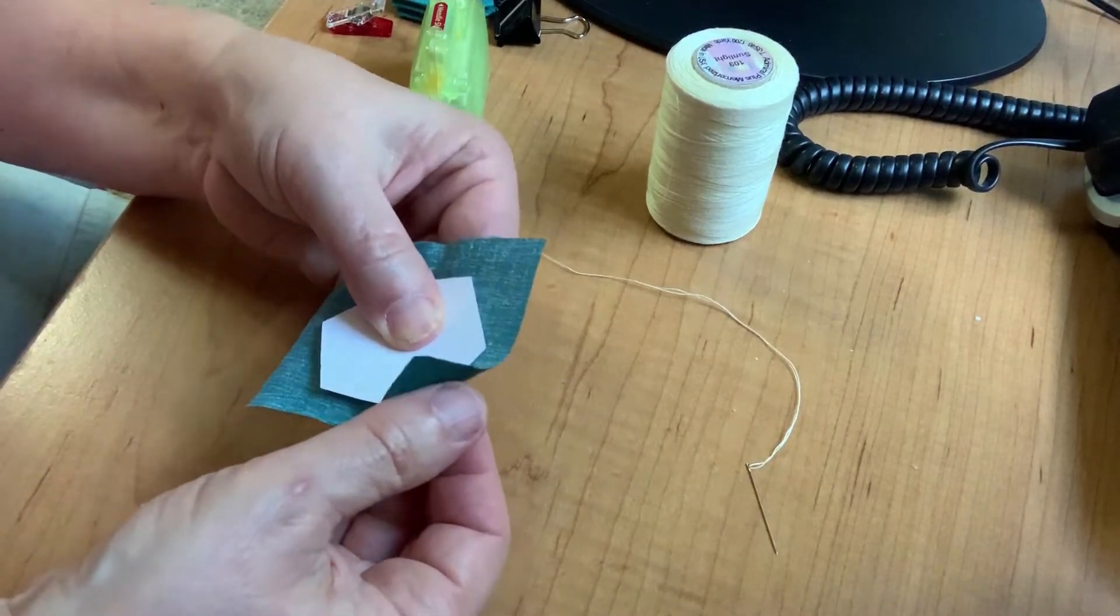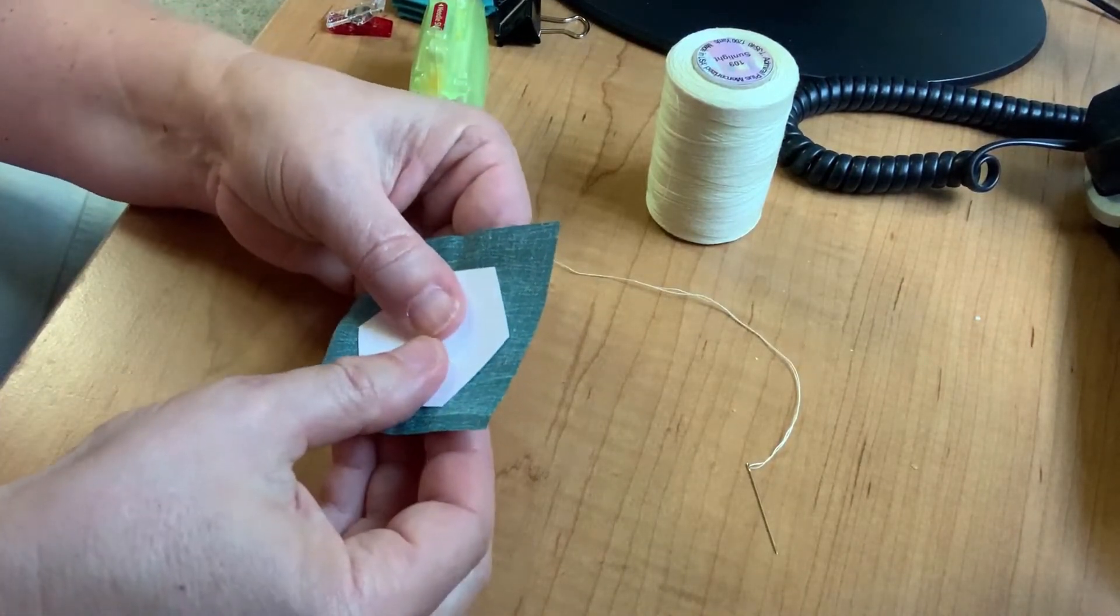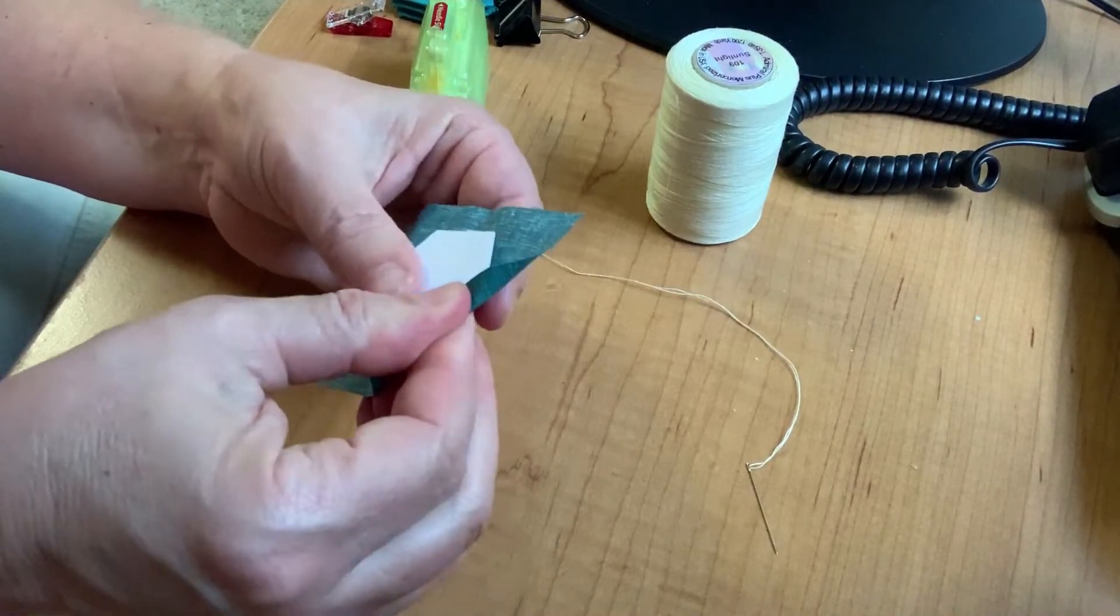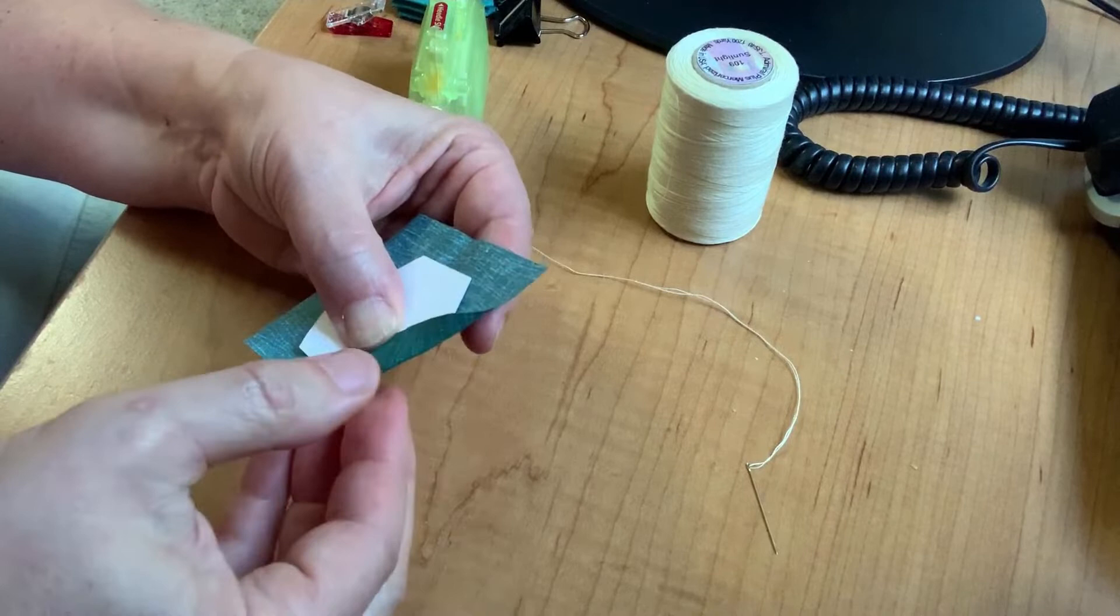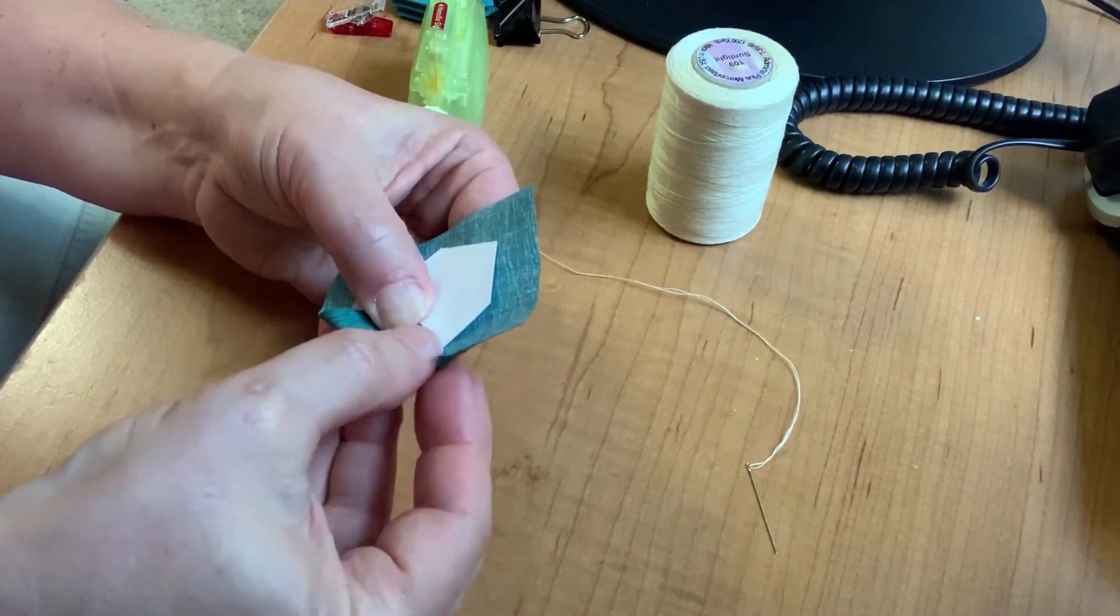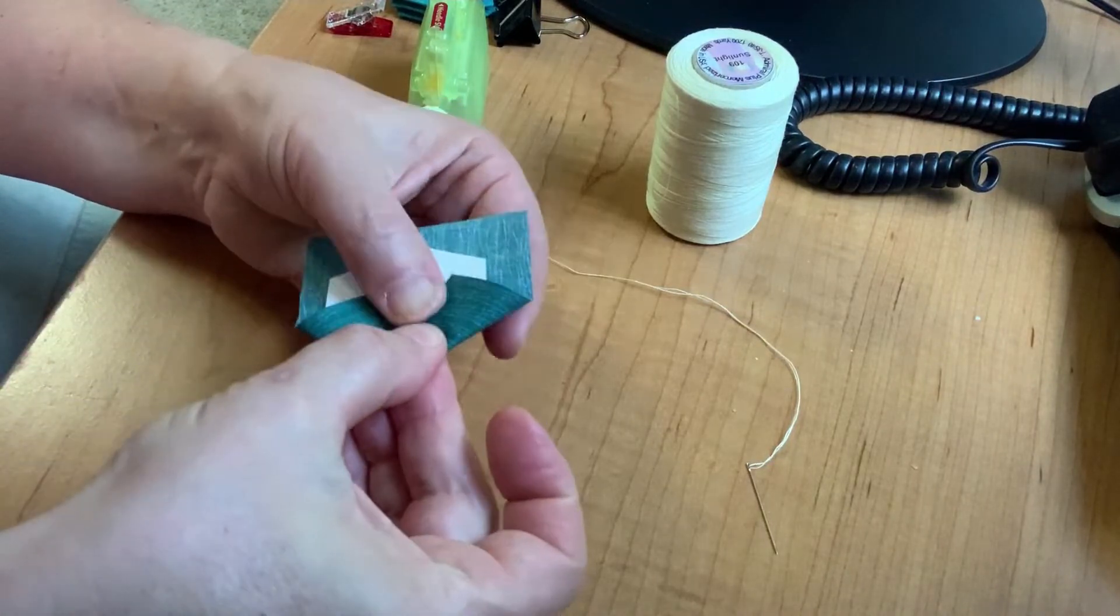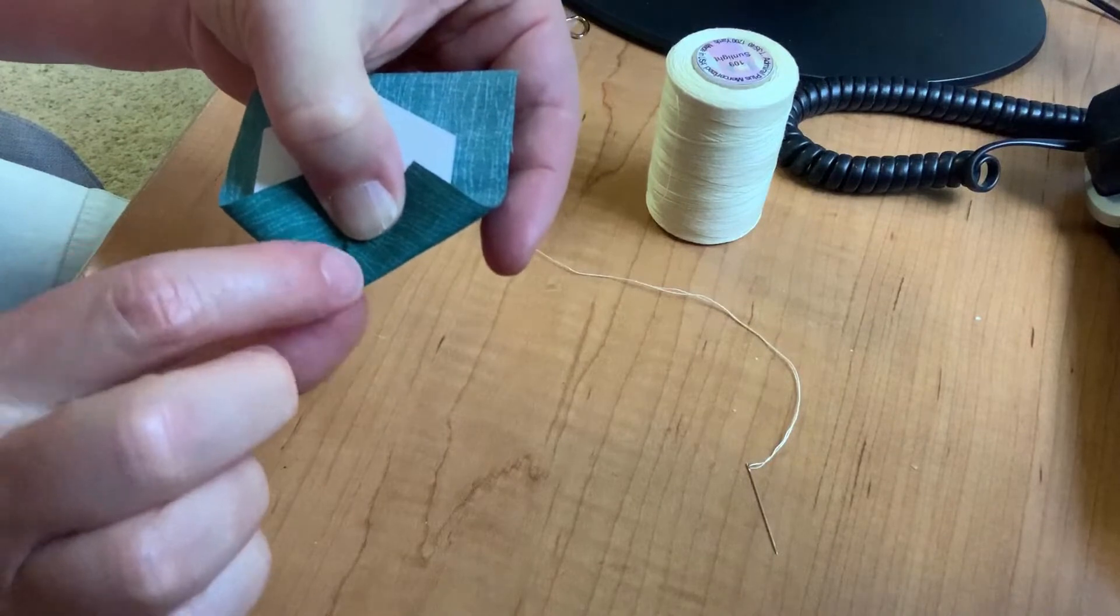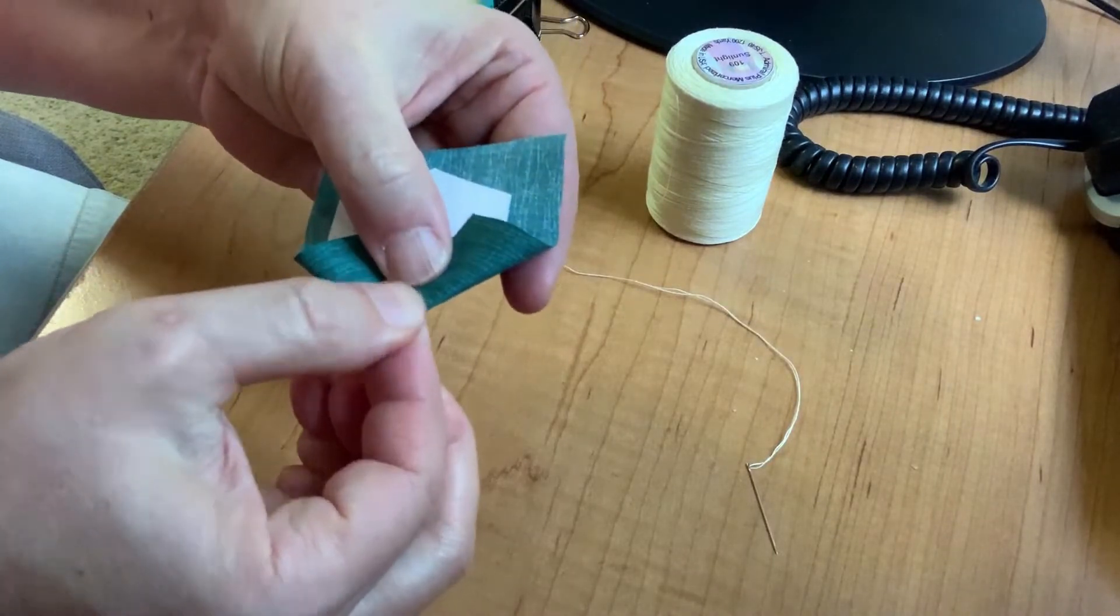So I'm going to take the hexagon and the fabric and I'm going to fold a crease along the first edge. I'm going to work counterclockwise and I'm going to fold a crease over the second edge and you can see that I've got that very sharp corner.